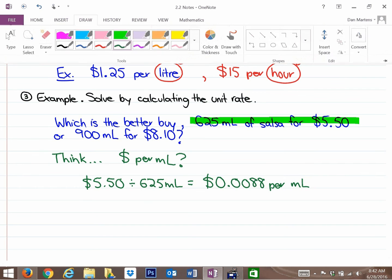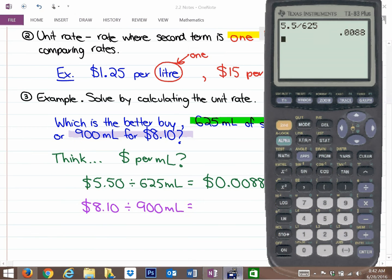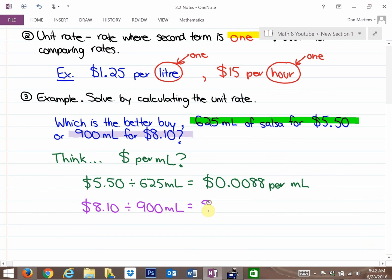So let's look at salsa number 2 so we can compare these. Salsa number 2 is $8.10 for 900 milliliters, and if we want to find out the cost per milliliter, because this will be a useful number, we are going to do $8.10 and divide it by 900 milliliters. And that gives us a unit rate of 0.009 dollars per milliliter.